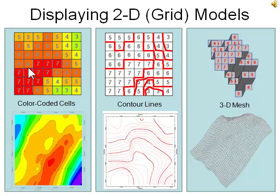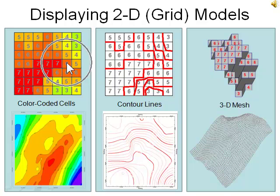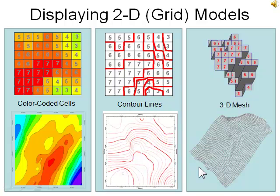Here are three ways in which 2D grid models can be displayed or visualized. In the first example, the cells are color-coded based on their node values. By making the cells smaller and smoothing the edges, we get a color-coded contour map. Another method is to draw lines between cells that are different; again, by making the cells smaller and smoothing the lines, we get a contour map. Finally, the cells can be plotted in three dimensions such that the height of each cell is proportional to the corresponding node value. A finely spaced grid gives a fishnet appearance. Note: this is a 3D display of a 2D model — it does not represent a 3D model.